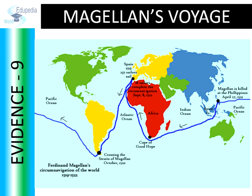Evidence 9: Ferdinand Magellan's circumnavigation in 1520 proved that the Earth is not a flat disc but a sphere. His successful journey made people believe that the Earth is spherical and not flat.